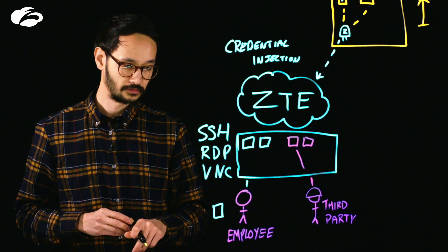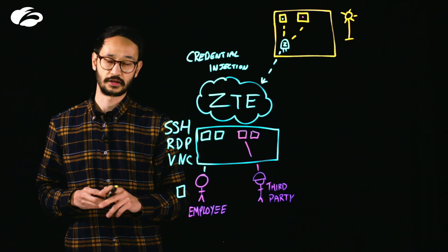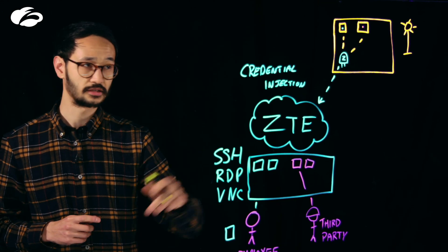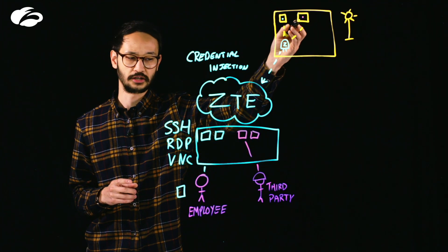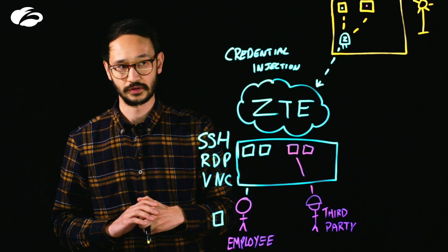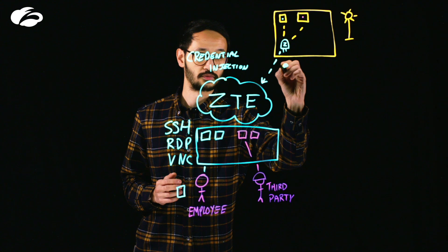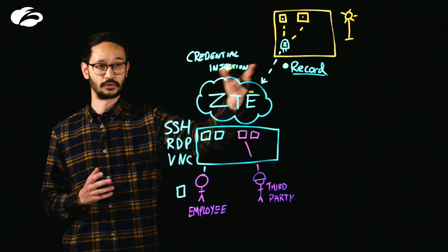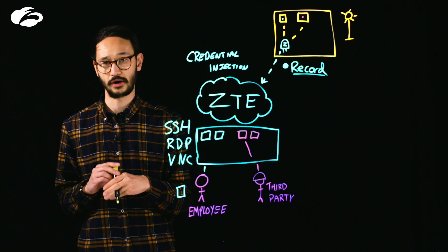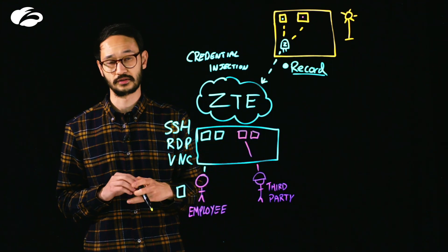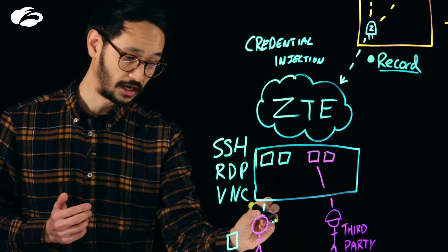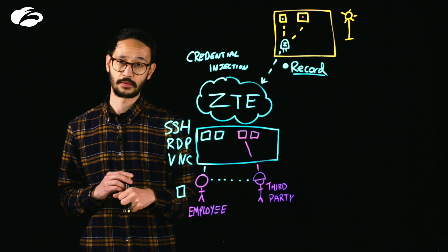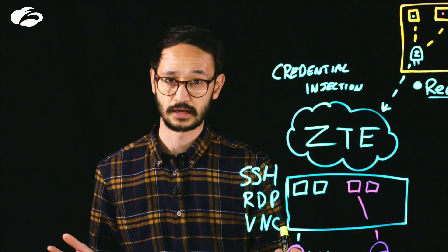What do we do for third parties? This third party is able to access those applications defined within the zero trust exchange because we know who that user is and what they're trying to access. They're given access controls and are then able to connect to the application. For auditability, we can start recording these sessions within the cloud — you can see exactly what happens when that third party logged on to that piece of critical infrastructure. We can also enable something called session proctoring or session viewing, so that the employee can see exactly what's happening on that third party session in real time.